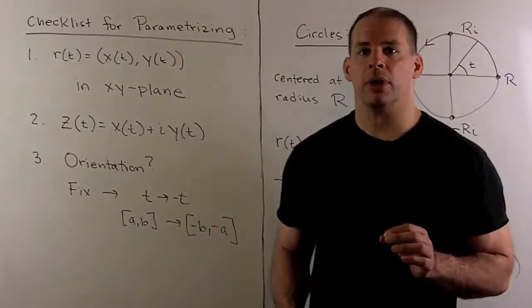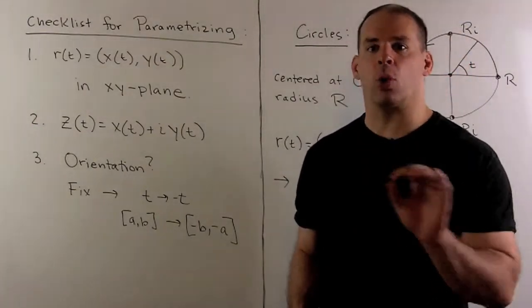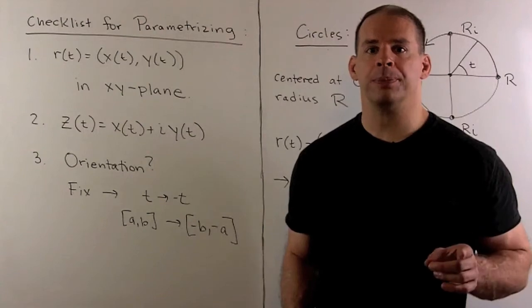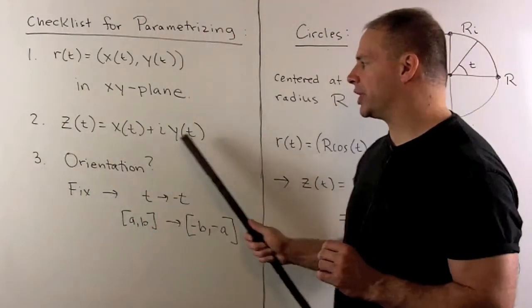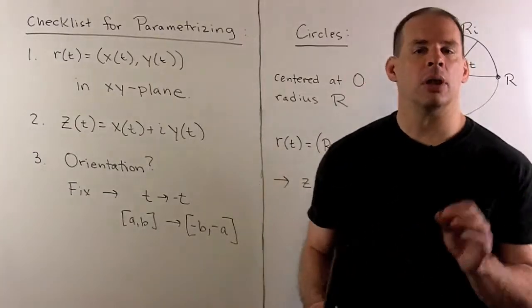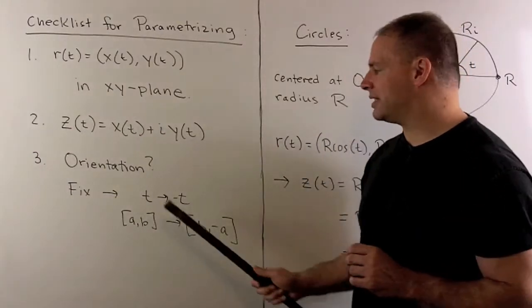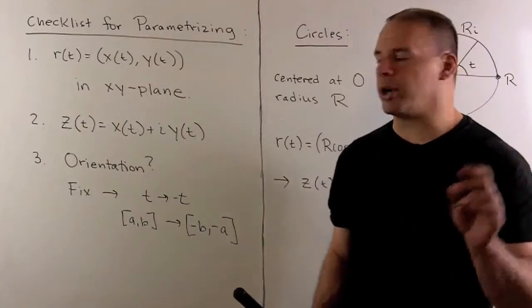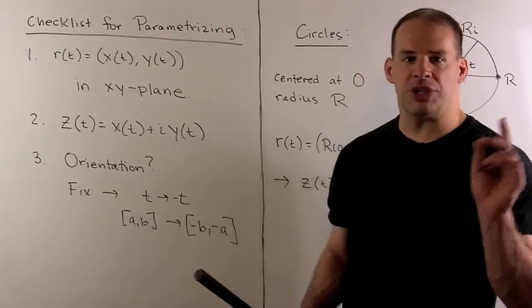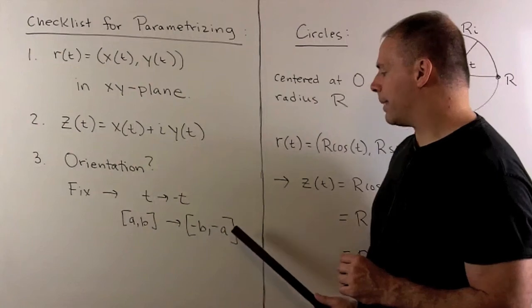When we do line integrals, we'll be interested in a direction or an orientation for our curve. So if we don't have the right orientation with the parametrization for part two, the way we can fix that, we're going to replace t with minus t. Then the interval that we're using for our parameter, say ab, we change that to minus b minus a.